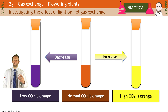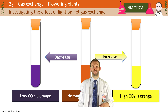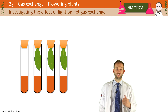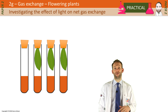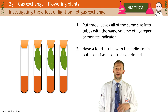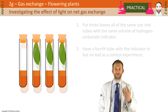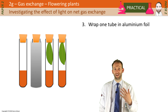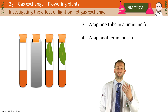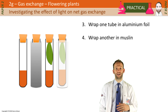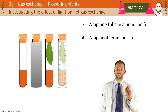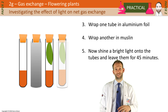You can set up experiments with four tubes — three with leaves in and one as a control tube — each containing the same volume of hydrogen carbonate indicator. You then expose them to different light intensities: wrap one in aluminium foil, wrap another in muslin to let a little bit of light through, and leave one completely exposed to light. Shine light on them for about 45 minutes.